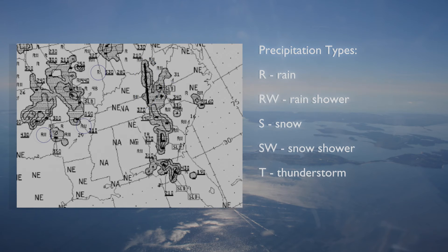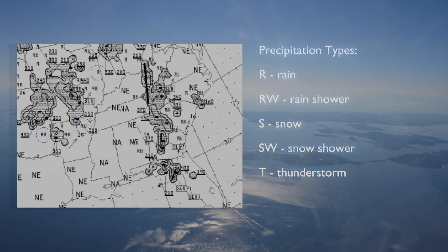Letters on the Radar Summary Chart indicate the type of precipitation. These letters have the same meaning as they do in the textual Radar Weather Report: R for rain, RW for rain shower, S for snow, SW for snow shower, and T for thunderstorm.